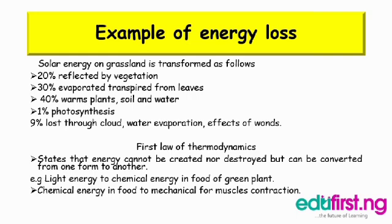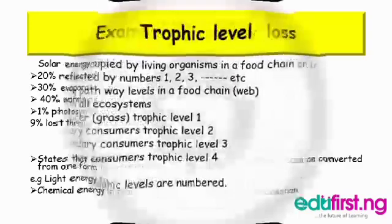So we're going to look at the first law of thermodynamics. It states that energy cannot be decreased nor destroyed, but can be converted from one form to another — for example, light energy to chemical energy in food of green plants, and also chemical energy in food to mechanical energy for muscle contraction.